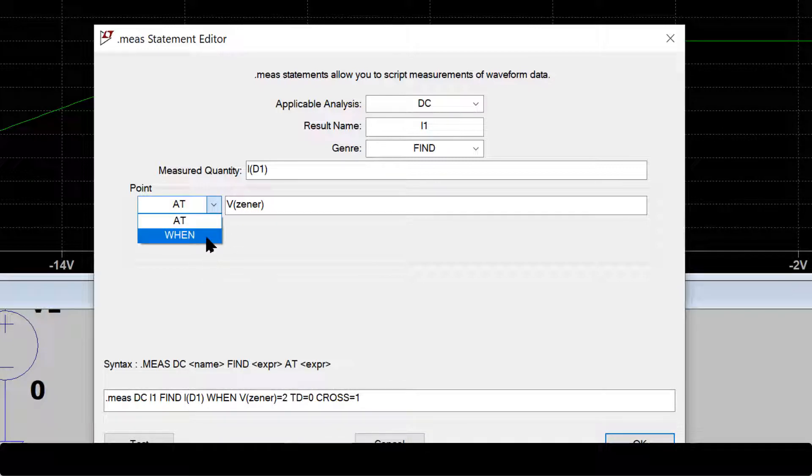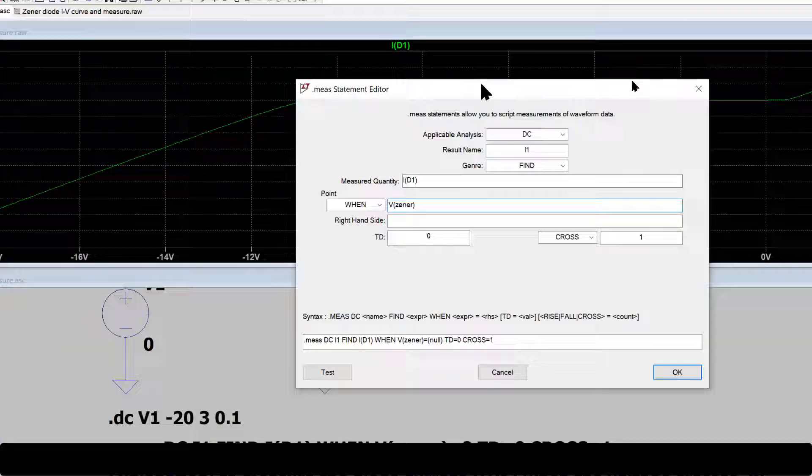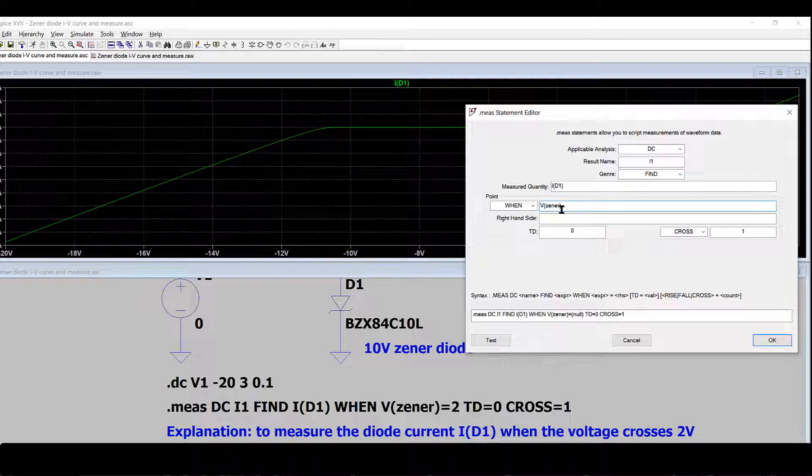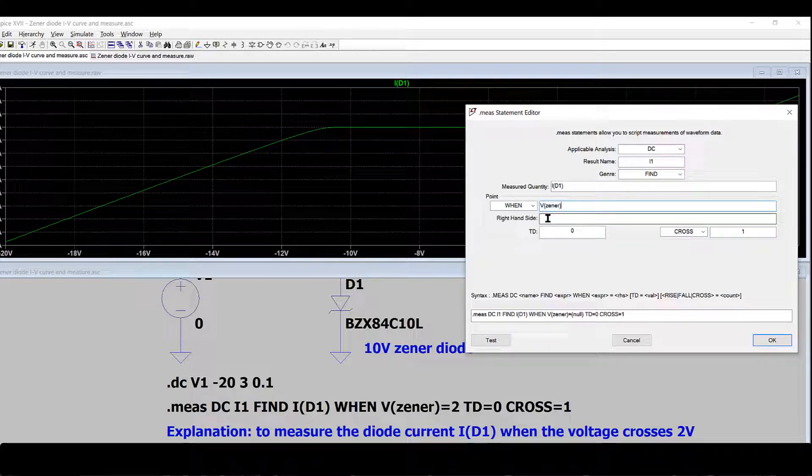It should be when the Zener voltage—because I have defined the Zener voltage as Zener—so the right-hand side should be 2V. When the Zener voltage equals 2V.